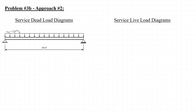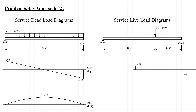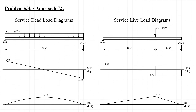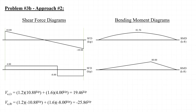Now let's solve this modified problem using approach number two. We sketch the shear force and bending moment diagrams from the service dead load and the service live load, then rearrange them with shear diagrams on the left and moment diagrams on the right. Evaluating load combination number two, the factored shear force V sub U at the left end of the beam is 19.5 kips, while at the right end it is 25.9 kips.